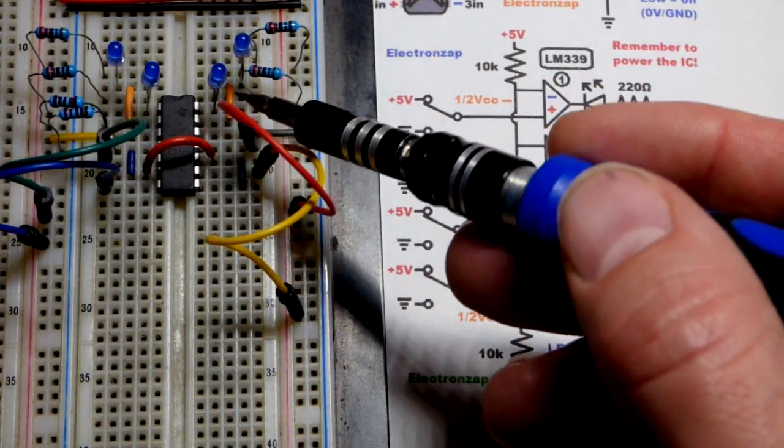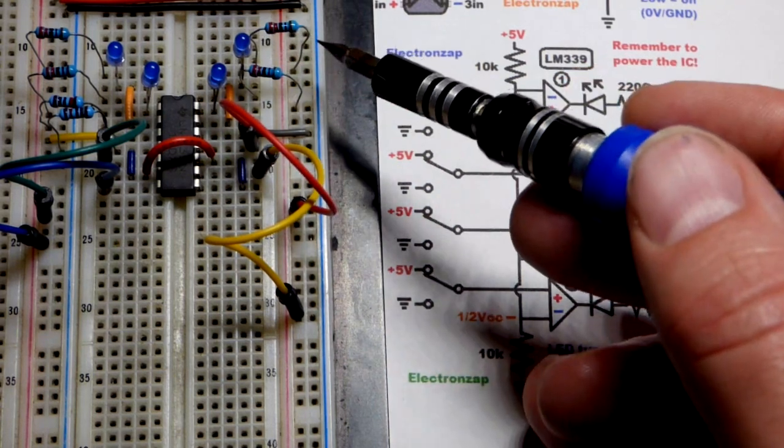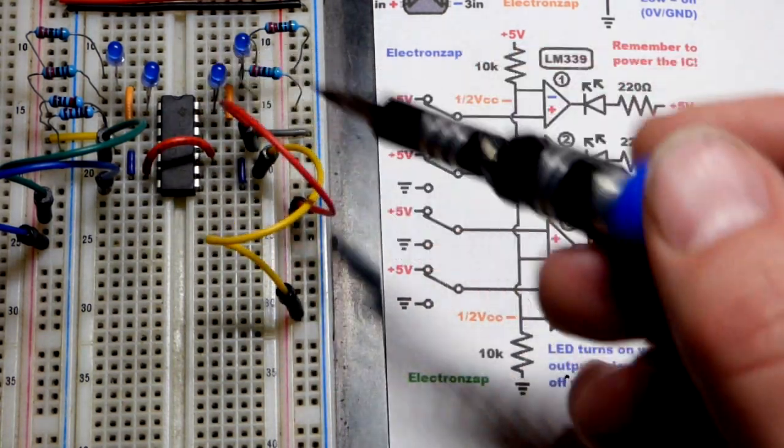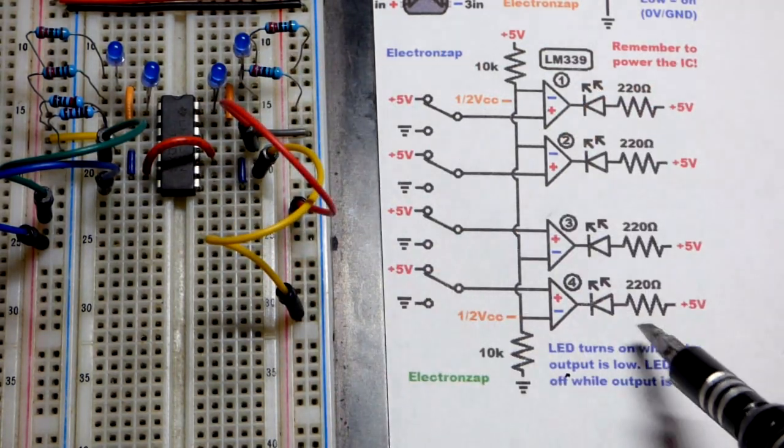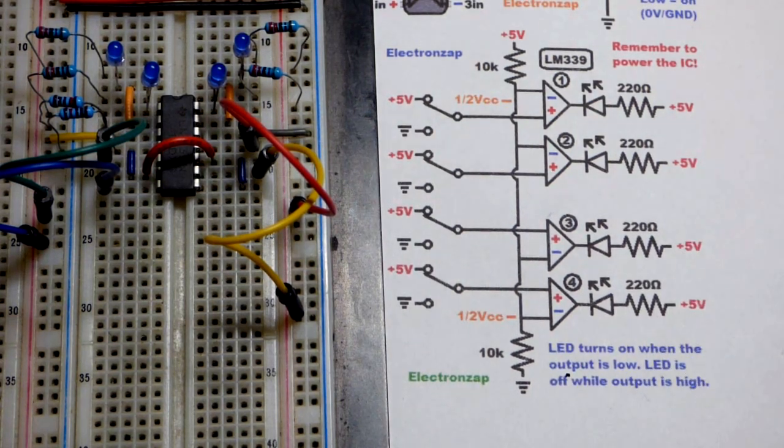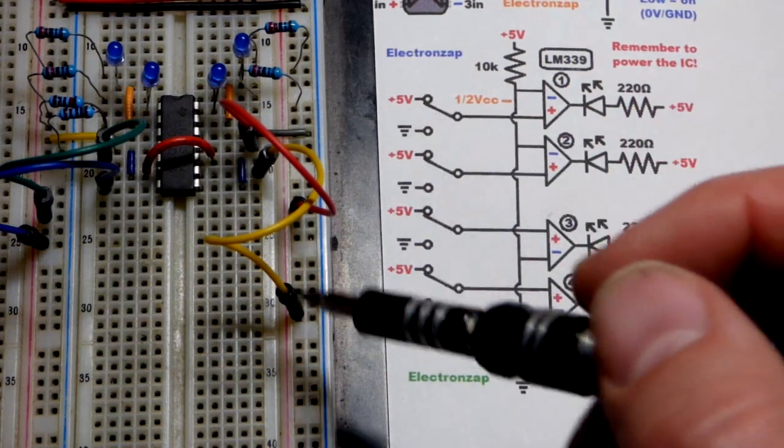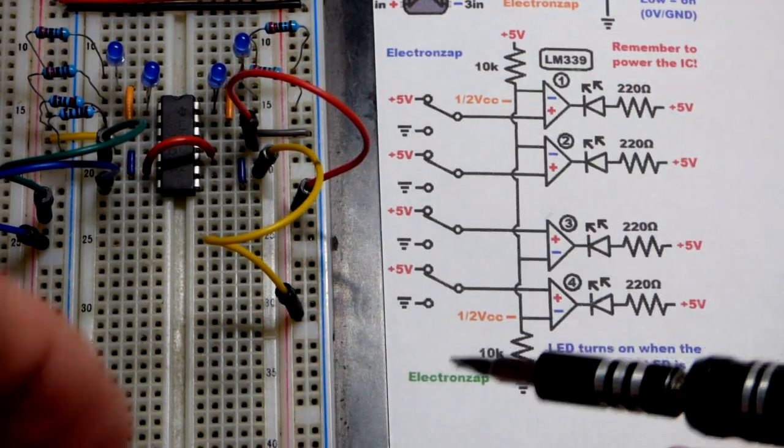So it's above wherever the cathode is. And they're all going to the positive supply. Since it's 5 volts, we're using 220 ohms. But in any case, right now all the jumpers are high. The LEDs are off.